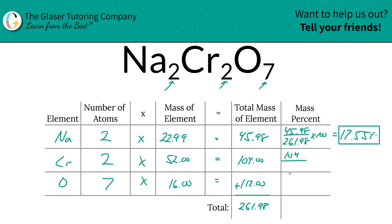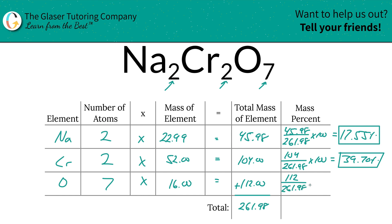For chromium, it's 104 divided by 261.98 times 100. Note that trailing zeros won't affect your calculation, though they might affect significant figures depending on how particular your professor is. For oxygen, it's 112 divided by 261.98 times 100. When we do that division, oxygen comes out to 42.75%.